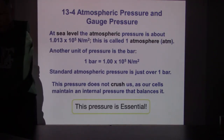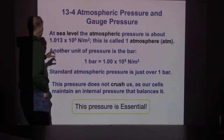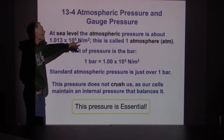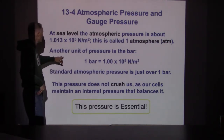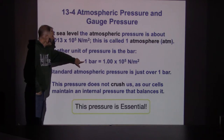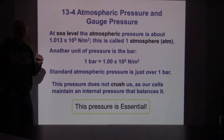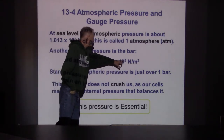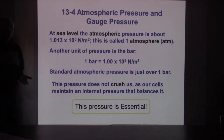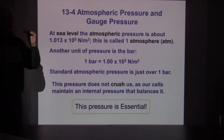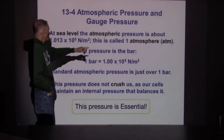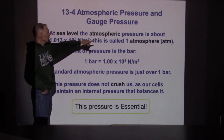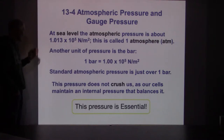At the ocean level, atmospheric pressure is about 101,300 newtons per square meter. This is called one atmosphere. There's also a unit called a bar — 100,000 newtons per square meter. You'll hear this on weather reports. Notice a bar is almost the same thing as an atmosphere, but not quite. Standard atmospheric pressure is just above one bar. We have too many pressure units.